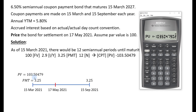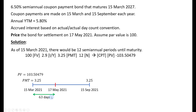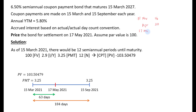Now we need to determine the number of days from 15 March 2021 to 17 May 2021. That is 63 days total. From 15 March to 31 March is 16 days, April has 30 days, and from 1 May to 17 May is 17 days — adding up to 63 days. Since we are using the actual/actual day count convention, we use the actual number of days per month.